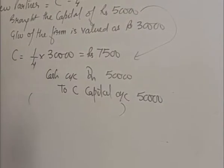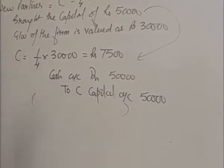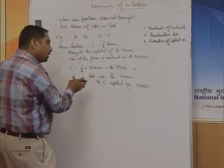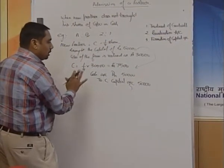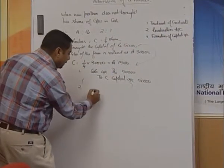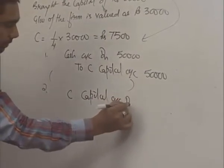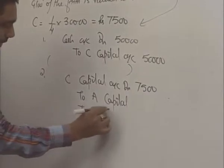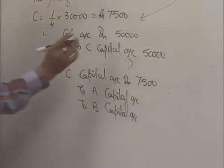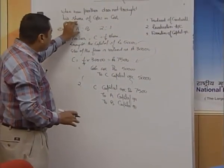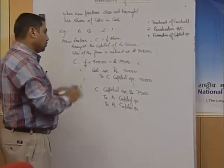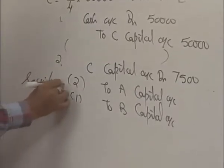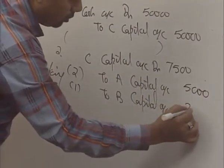Now, for the goodwill which he has not brought, there are two possible conditions. One is either we take the amount of goodwill from his capital, in case capital has been brought, or we can take it from his current account by opening the current account. The second entry is C capital account debit 7,500 to A capital, to B capital. Goodwill is always distributed among the old partners in sacrificing ratio. So this 7,500 is divided in ratio 2:1, coming out to be 5,000 to A and 2,500 to B.